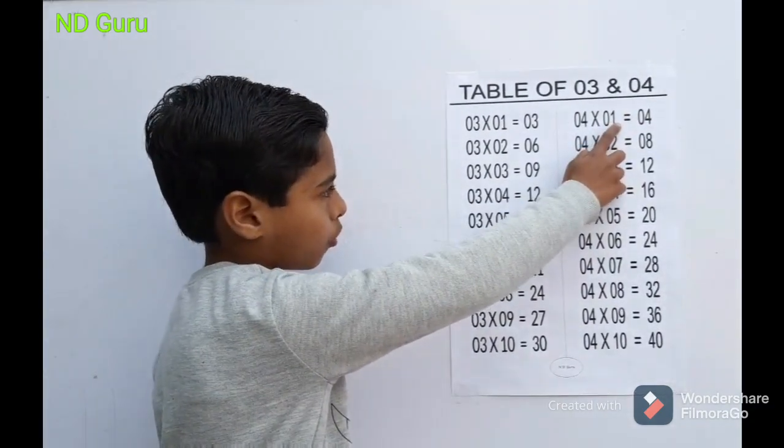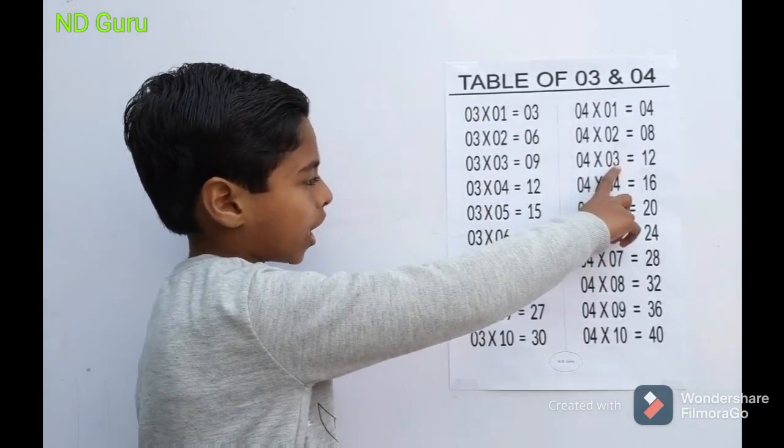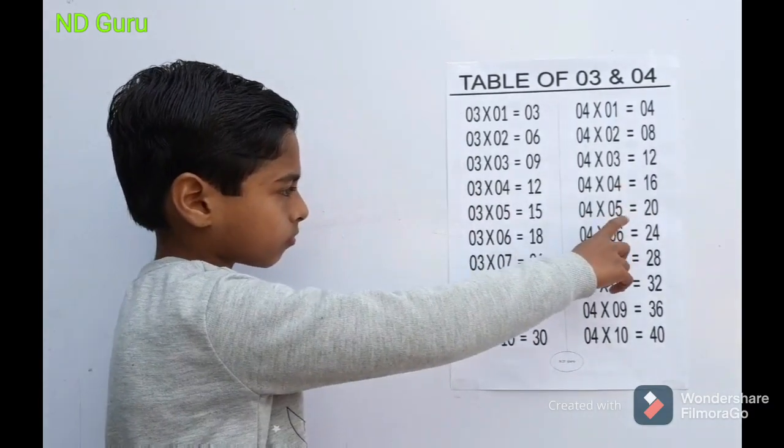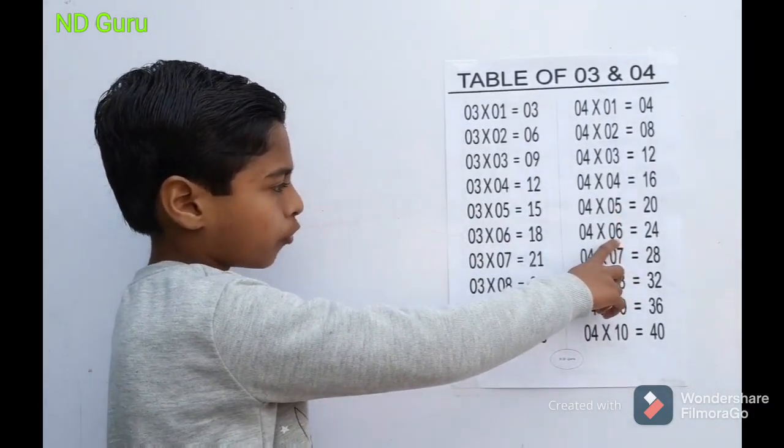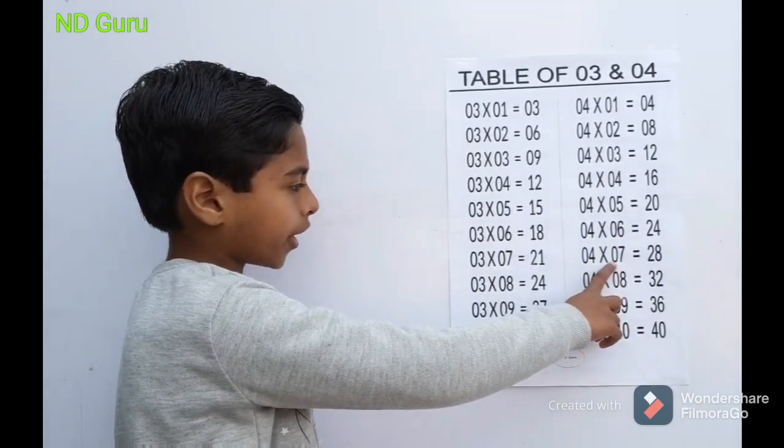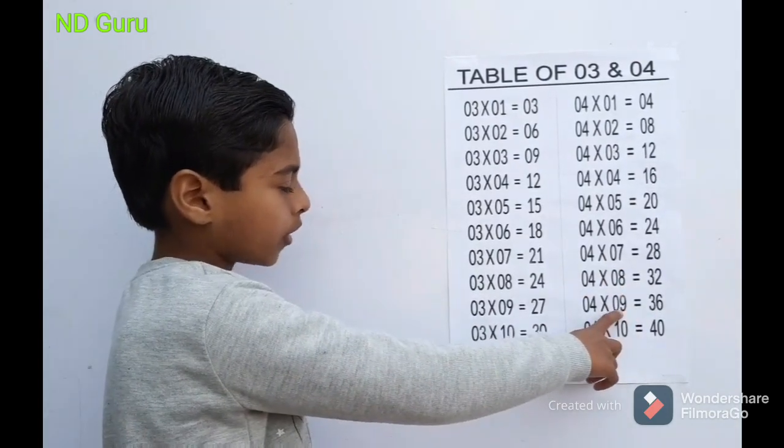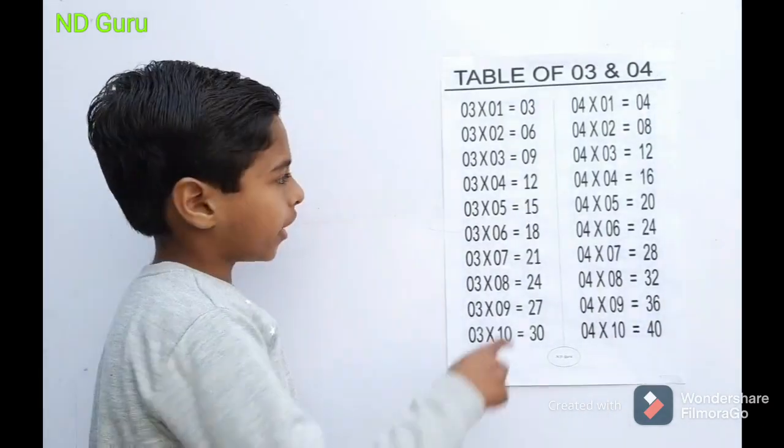4 1s are 4, 4 2s are 8, 4 3s are 12, 4 4s are 16, 4 5s are 20, 4 6s are 24, 4 7s are 28, 4 8s are 32, 4 9s are 36, 4 10s are 40.